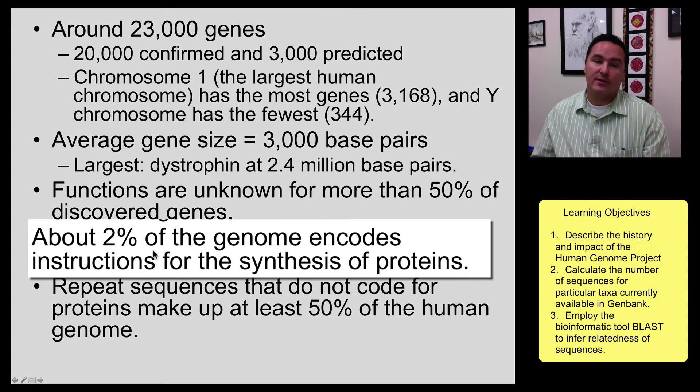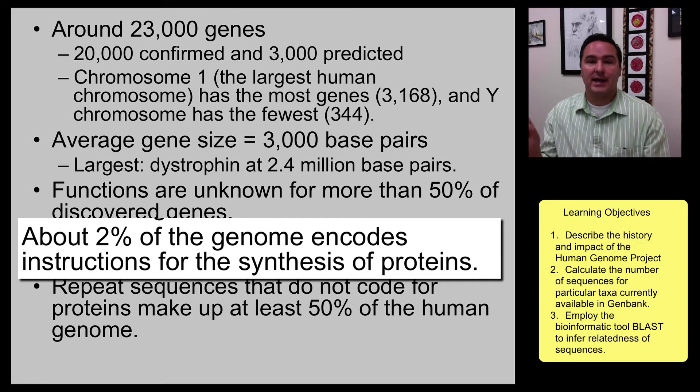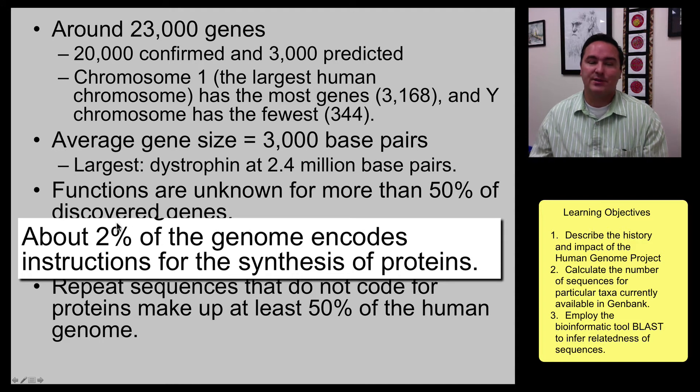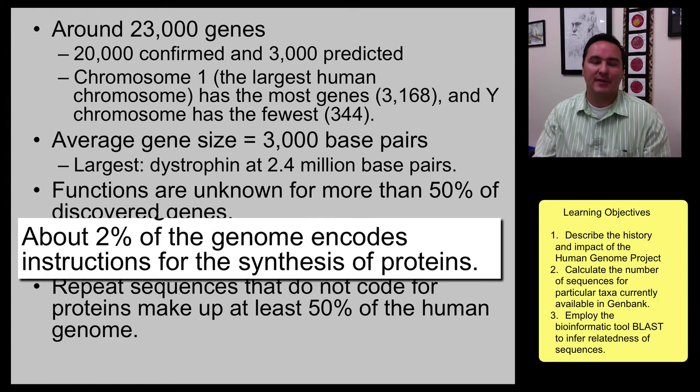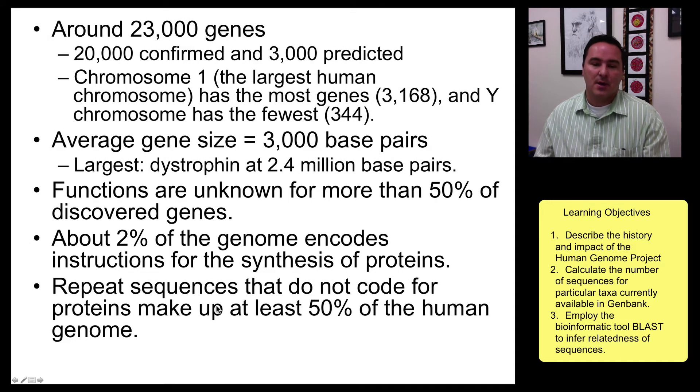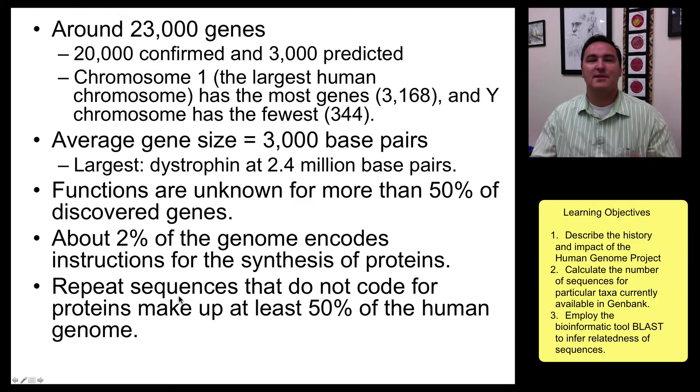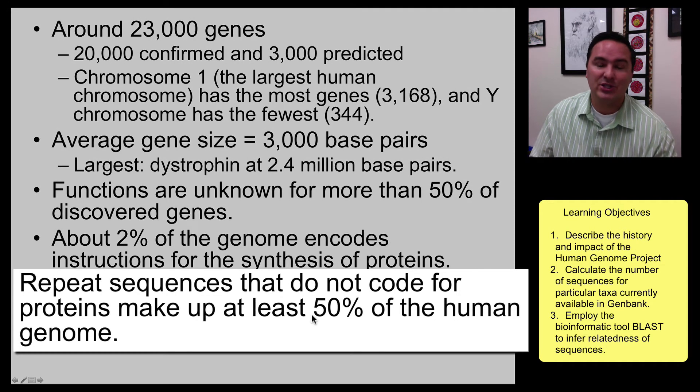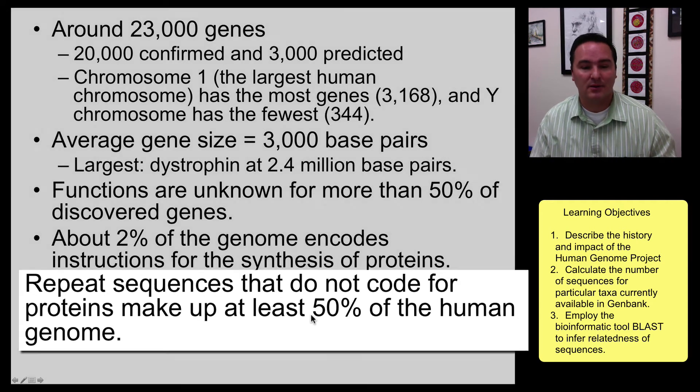About 2%, though, of those 3.2 billion nucleotides are only used in encoding instructions for the synthesis of proteins, so a surprisingly small percentage of all of our DNA actually makes proteins, actually goes through the process of transcription and then translation to make proteins. Most of, actually, what our genome is made up of are repeat sequences, so this is DNA that's repeated over and over again. Remember, we talked about those with STRs, small tandem repeats, that are used in the DNA profiling, so about 50% of the human genomes are made up of these repeat DNA sequences.